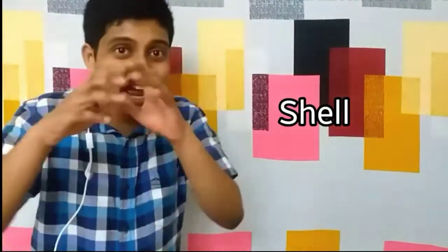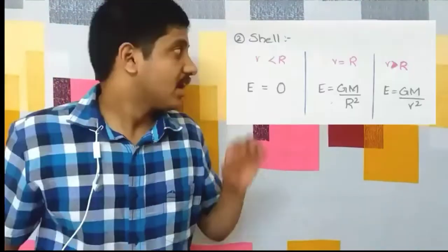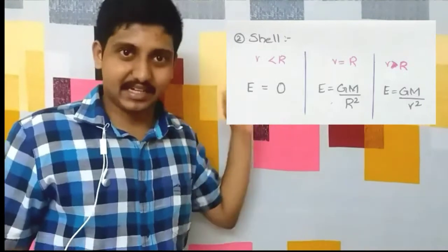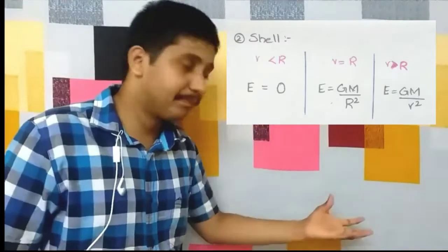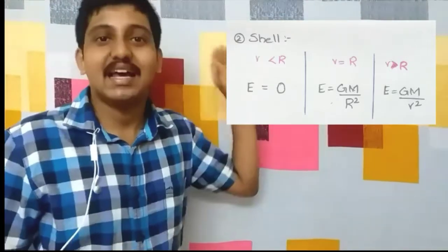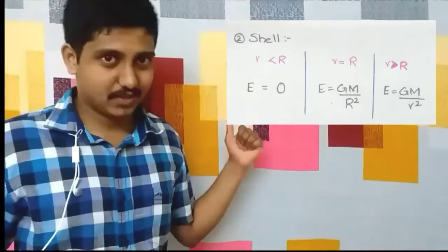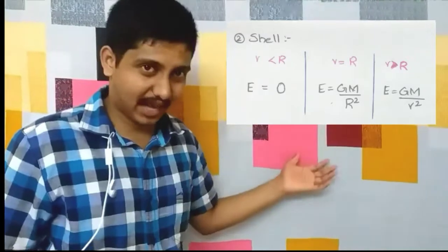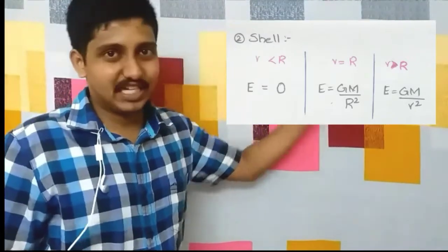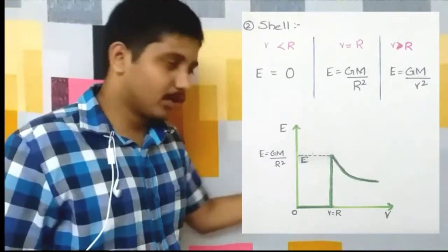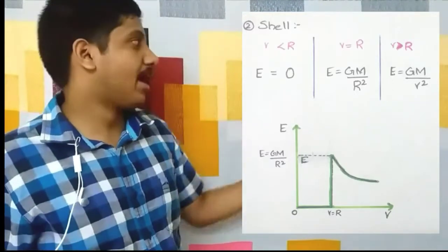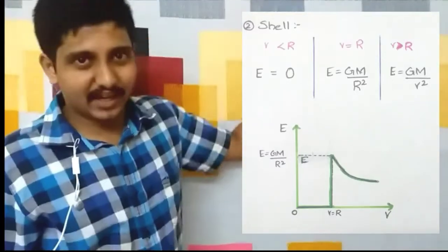Now let's take the case of a shell, or hollow sphere. Remember: the gravitational field inside a hollow sphere is always zero. So from the center to the surface, E = 0. When r = R, we have E = Gm / R², same as for a solid sphere. For r > R, E = Gm / r². The graph starts at zero, jumps to Gm/R² at the surface, then follows a curve.